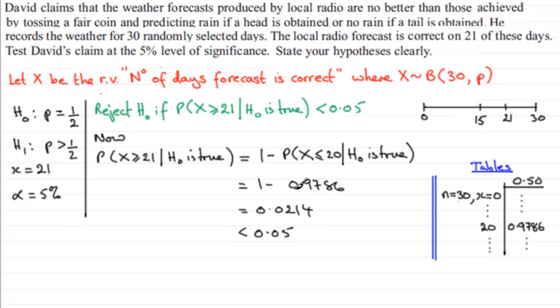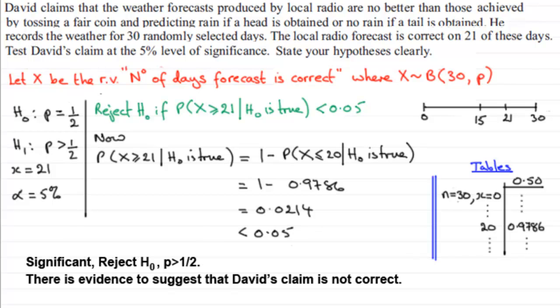And we said that we would reject H0 if the probability of being more than 21 was less than 5%. In other words, this is an extreme value. So therefore, this is a significant result, meaning I'd want to reject H0. In other words, I'm thinking that P is now greater than half. And so what this can be summarised as is that it's significant, I'm going to reject H0, P is greater than half. And I would write that there is evidence to suggest that David's claim then is not correct.